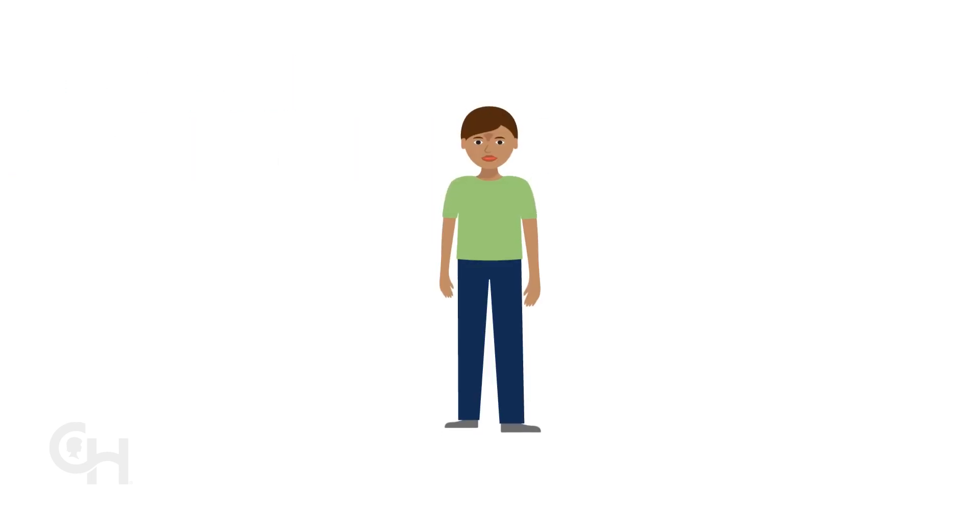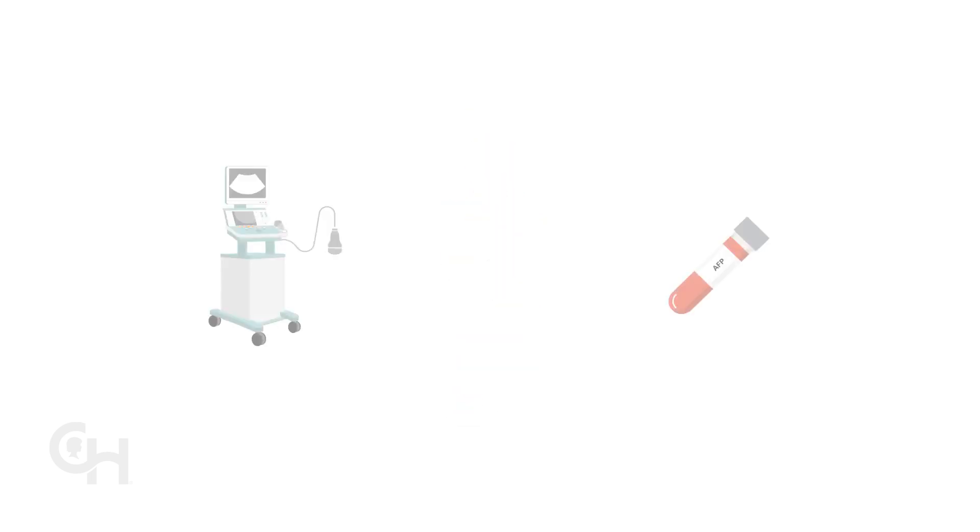Management of BWS may be different for each child as it depends on their individual features. Given that children with BWS have an increased chance of developing tumors during childhood, it is recommended that they have regular screenings. Two types of tumor screenings that are recommended for children with BWS include abdominal ultrasounds and blood tests to measure alpha-fetoprotein concentration, or AFP.